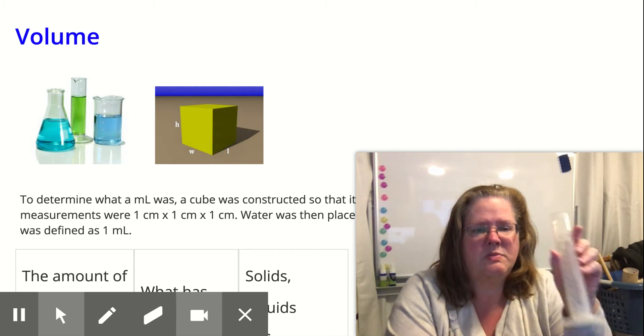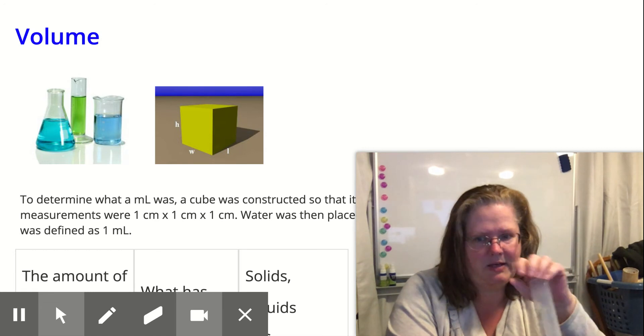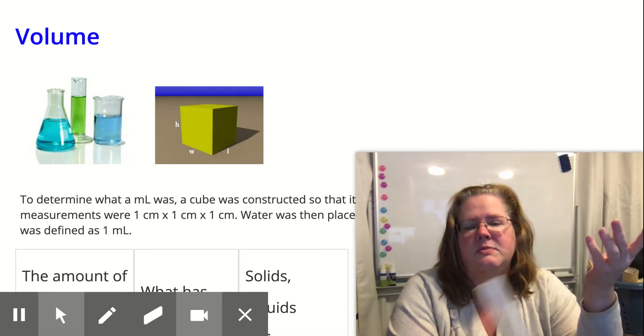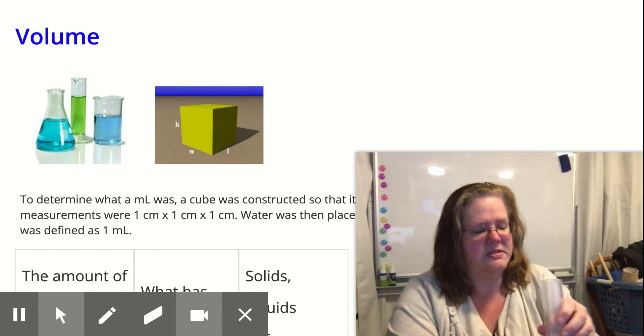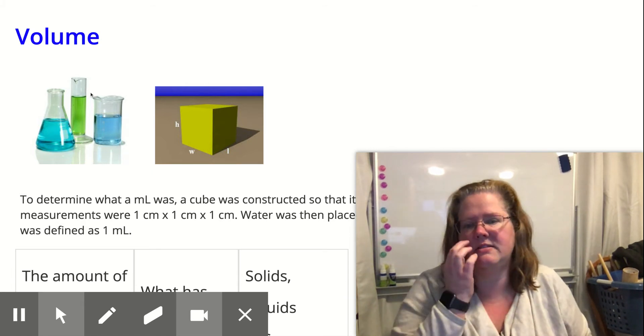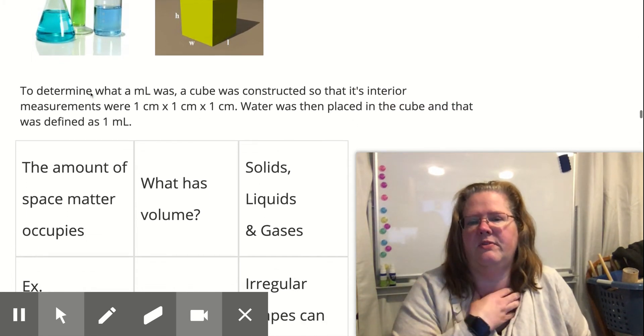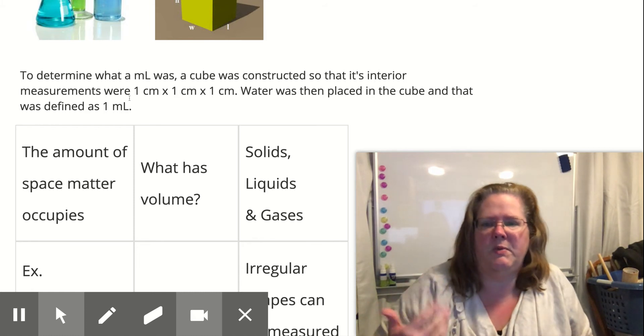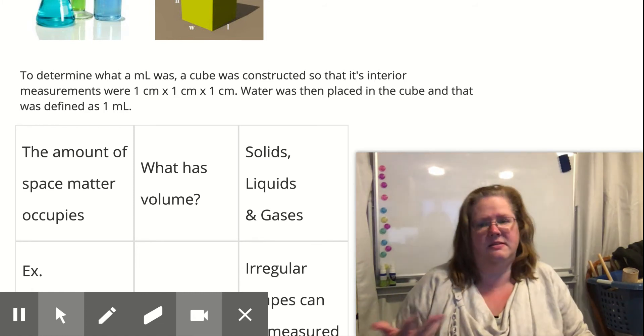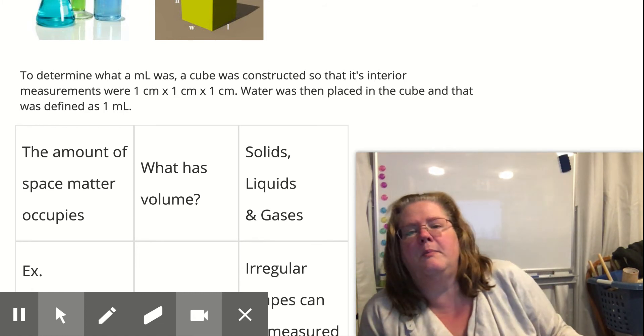So through displacement, we can find the volume of irregularly shaped solid objects. Through other formulas, pyramids like that, we actually have formulas that we can find to figure that stuff out. For example, the volume of a cube, if it's 1 cm × 1 cm × 1 cm, is 1 × 1 × 1, or 1 milliliter.